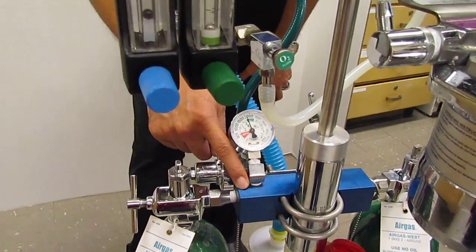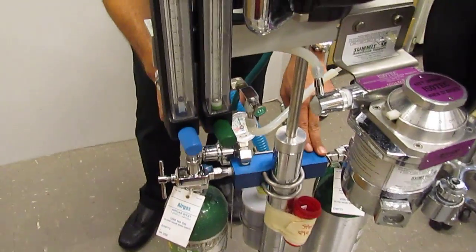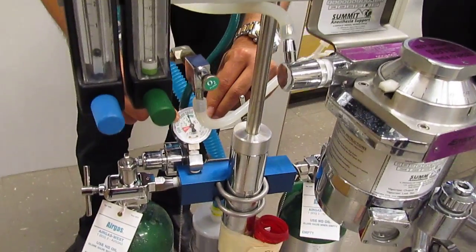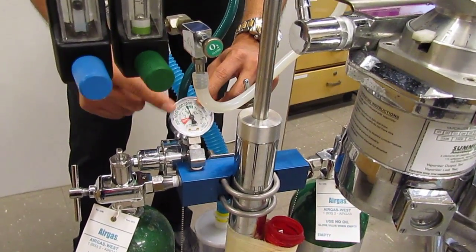Okay, from the yoke, we connect to the rest of the machine. You'll notice that then we go through the manometer that tells us how much oxygen we have. We already talked about that.